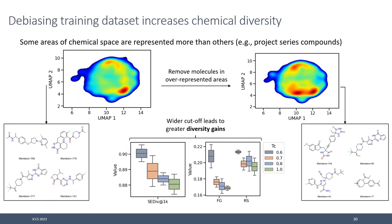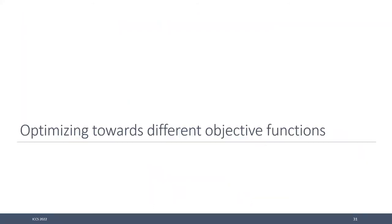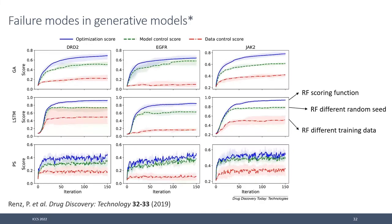Debiasing the training dataset is really important and something I haven't seen done in the literature. With chemical datasets you get a very uneven distribution — some areas of chemical space are represented much more than others. If you try to debias this and even out the distribution, you get much more interesting and diverse molecules, which has a large impact on the generated data. There's also a popular paper showing how a generative model can exploit an ML model used as a scoring function.